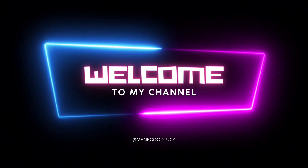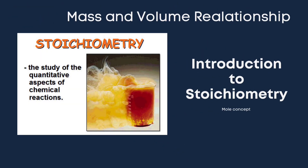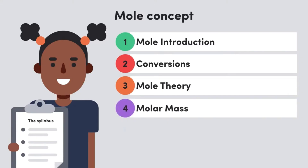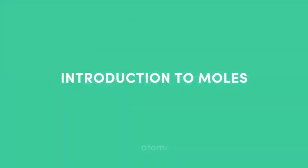Hello, it's nice to have you back. In today's lesson, we will look at a very important topic in chemistry termed mass and volume relationship, or what we know as stoichiometry. And don't get carried away when we talk of stoichiometry — we're talking about determining the quantity of substances in a chemical reaction. Briefly, we'll look at introduction to mole, conversion, mole theory, molar mass, and stoichiometry.